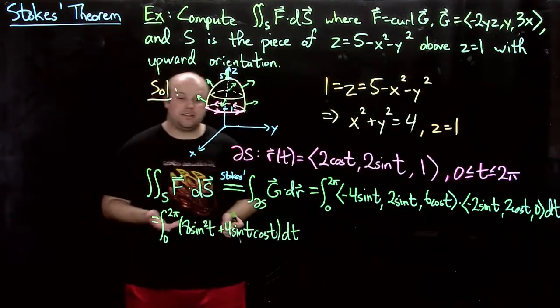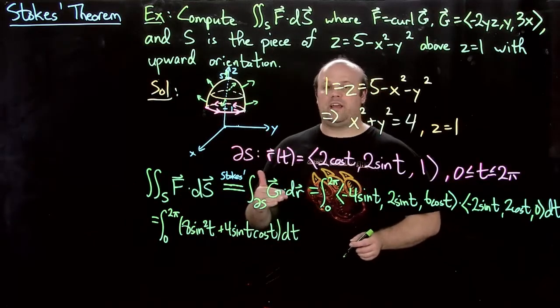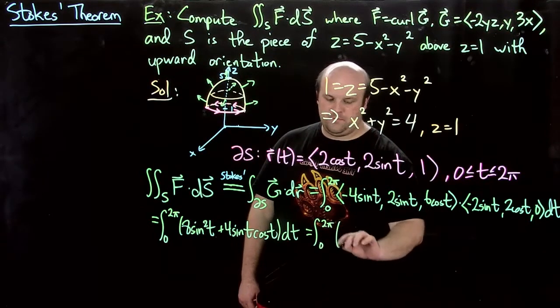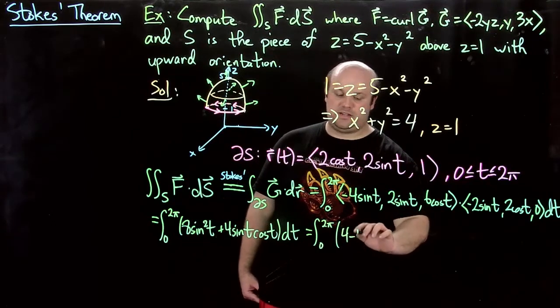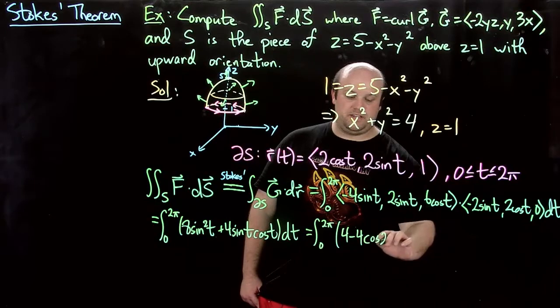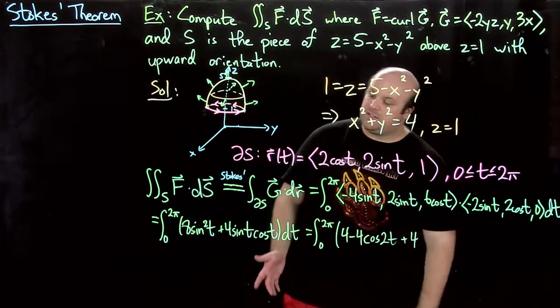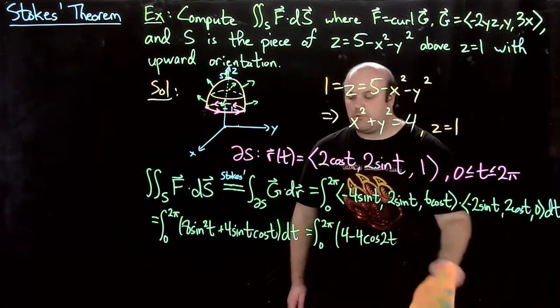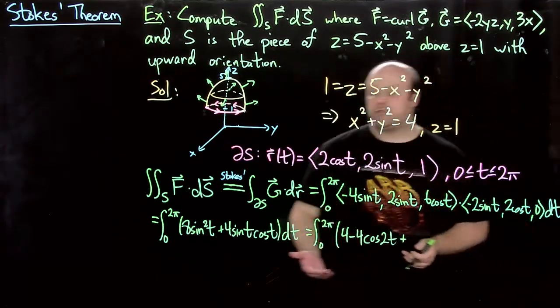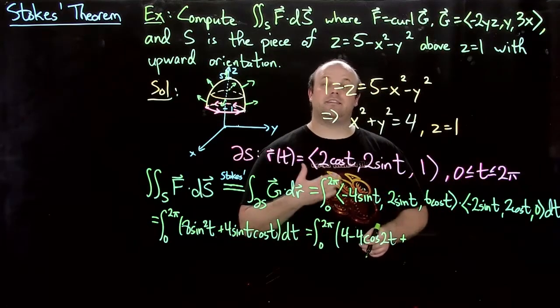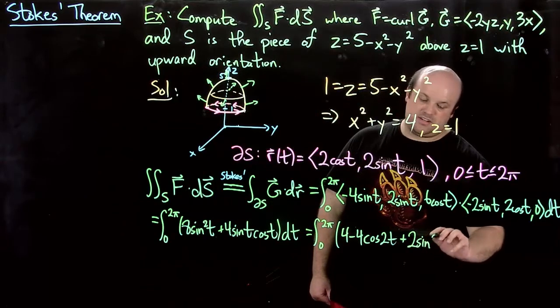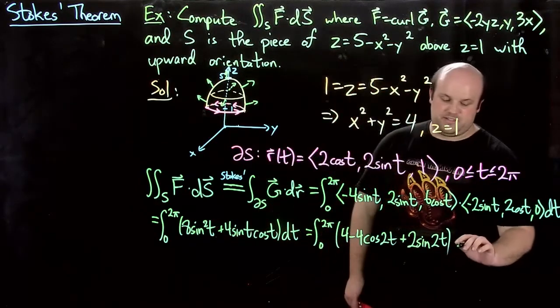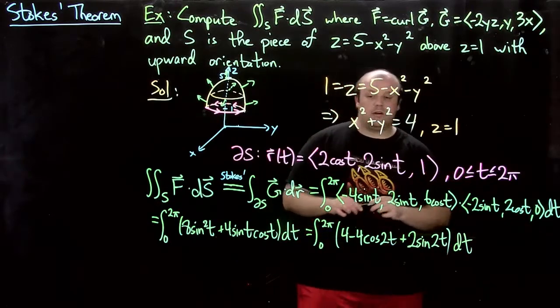So now we just have to integrate that. Remember sine² t is ½(1 - cos 2t), 0 to 2π. So that just becomes 4 minus 4 cos 2t plus 4. So actually, let's do a little trick here to make this a little easier. There's another trig identity: 2 sine t cosine t is the same as sine 2t, so 2 sine 2t. Now you could do this by a u substitution, but let's do this to cut down on the writing we have to do here.